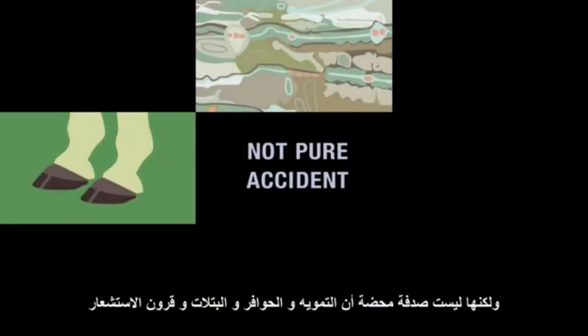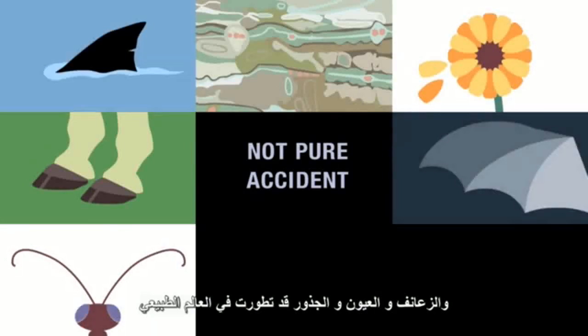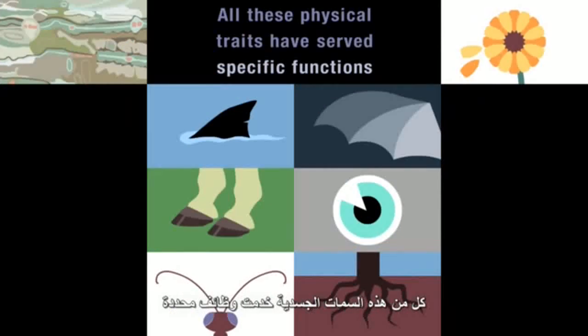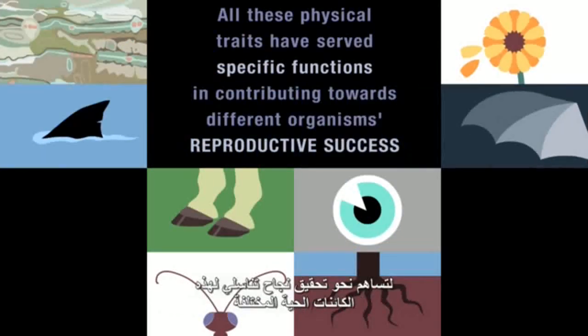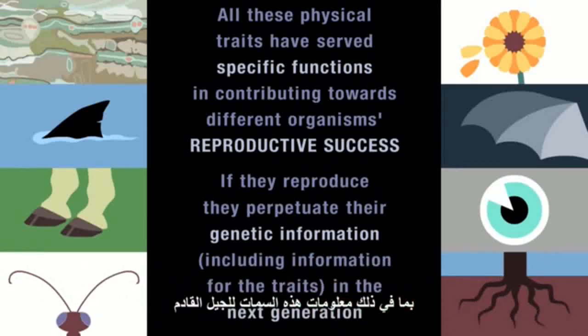Many who don't understand evolution try to discredit it by equating it with pure accident. But it's not pure accident that camouflage, hooves, petals, antennae, fins, wings, eyes and roots have evolved in the natural world. All these physical traits have served specific functions in contributing towards different organisms' reproductive success. And clearly if the organisms that exhibit these traits manage to reproduce, they perpetuate their genetic information, including the information for the traits, in the next generation.